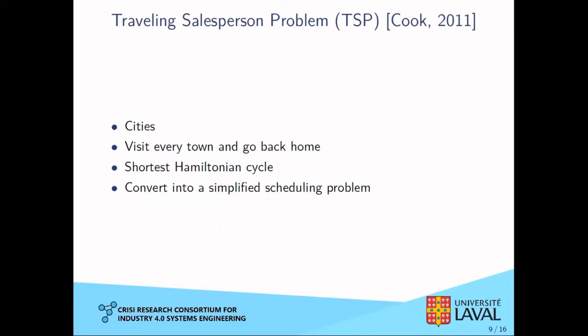A traveling salesperson goes from city to city to sell products, and at the end of the day wants to go back home — finding the shortest circuit through all cities, i.e., the shortest Hamiltonian cycle. To relate this to scheduling, consider a simple TSP with four cities A, B, C, and D, where edges represent distances. The shortest Hamiltonian cycle is shown in blue. To convert to a scheduling problem, we add a dummy node representing the start of the schedule, conveniently named node 0 with all edges of weight 0.